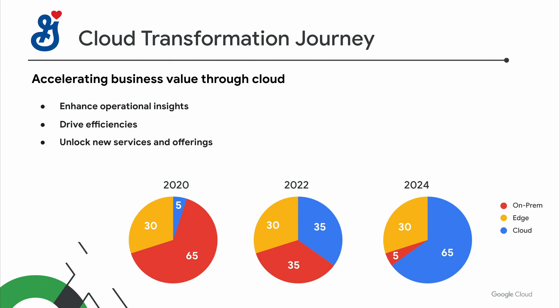We view cloud as a key business accelerator. It's a way that we're able to enhance operational insights by connecting data both internally as well as externally to build more personalized products, make faster supply and demand planning decisions, and provide better service and reliability to our customers and partners. It's also driving efficiencies for us, creating a scalable IT platform at a competitive cost, and unlocking new services and offerings, allowing us to utilize cloud-native capabilities to build new digital services in an agile manner. The graphs below help to really highlight the journey General Mills has been on. We started in 2020 with just 5% of our footprint on cloud, and we're now around 35%, anticipating by 2024 that we'll be at 65%. So we're really in that sharp growth curve right now.